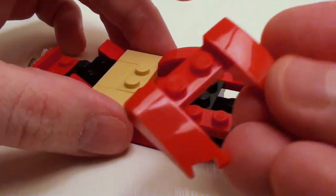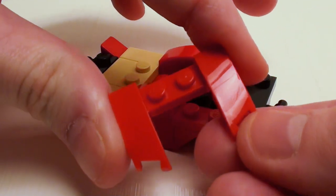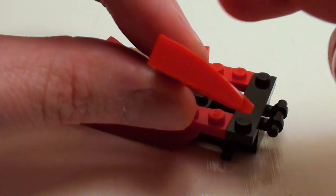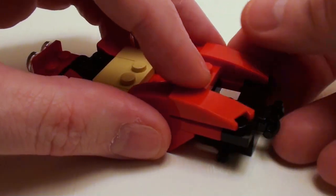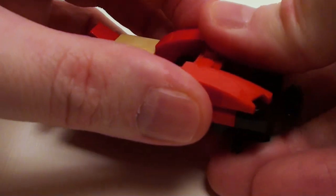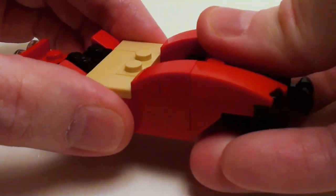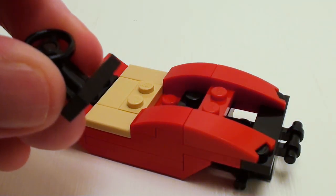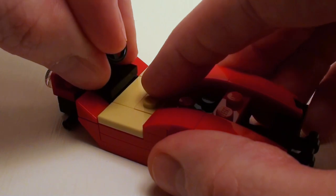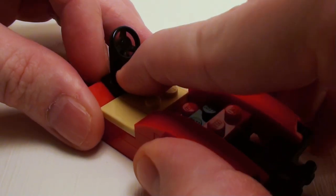For the back cargo area, I'm going to take one of these modified 3 by 4 plates with a bow. Set this right here. And a 1 by 2 steering console on top of the 1 by 2 plate.